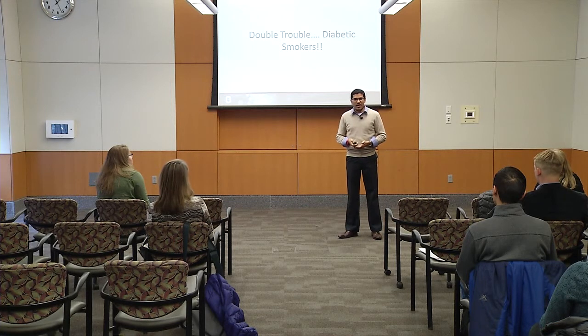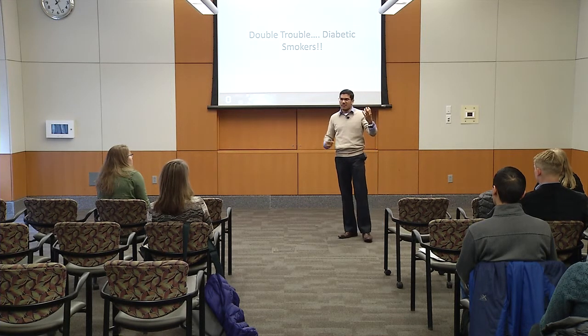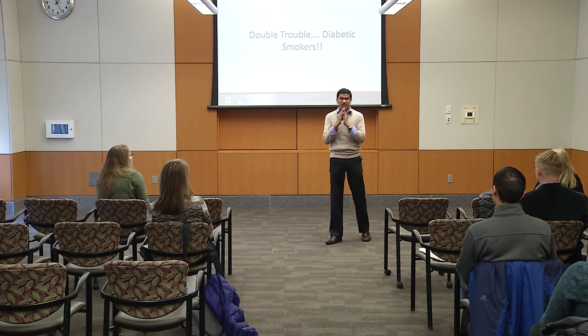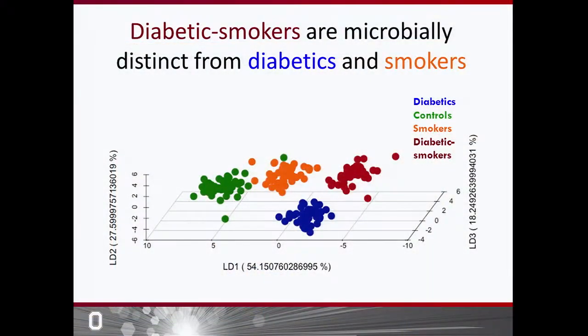Then there is this group — double trouble — diabetic smokers. We thought that if diabetes is bad and smoking is bad, it should be an additive effect: they should add together and be even worse, or at least calculable from understanding the effects of each. When we plotted the same graph, we realized that's not the case — diabetic smokers cluster themselves away and are not similar to either the smoking or the diabetes group. So we need to understand what causes this difference.